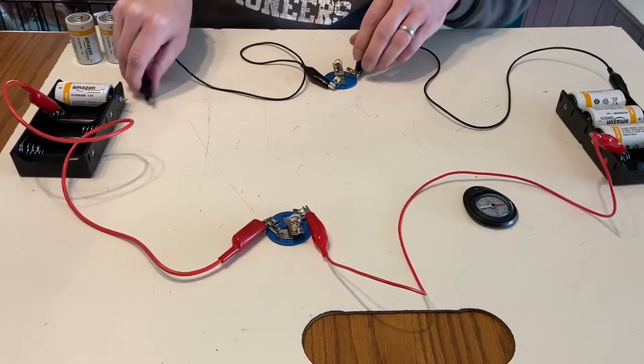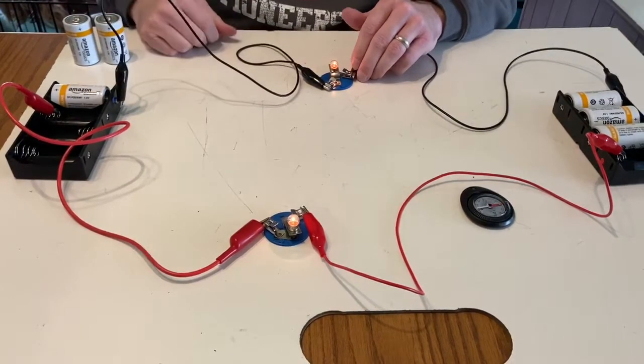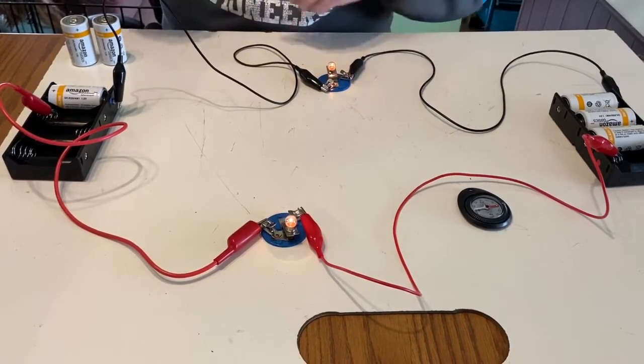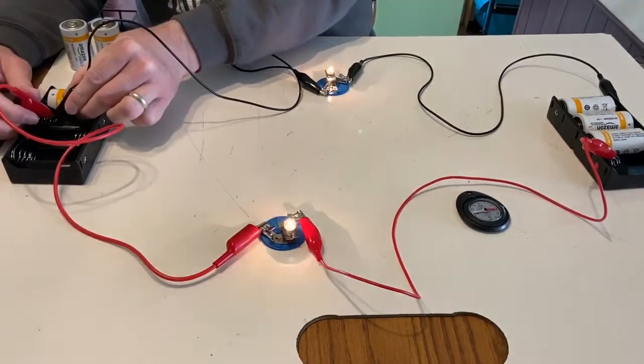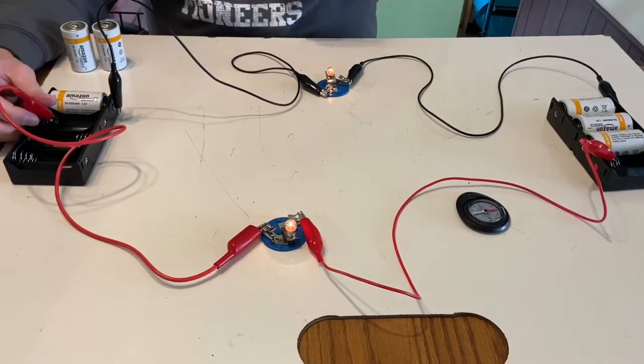So when I make this connection, so I've got my one-cell battery here for circuit B, and I can see that these bulbs are dimmer. For easy comparison, here's circuit A, here's circuit B.